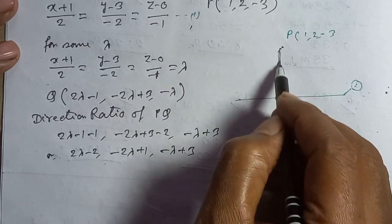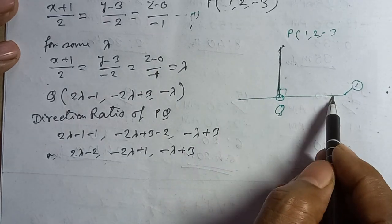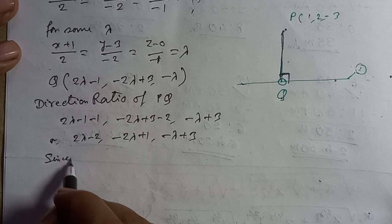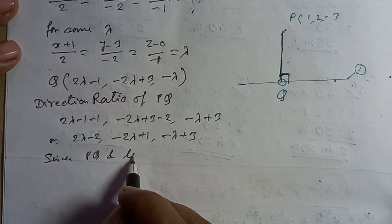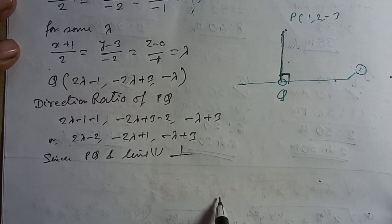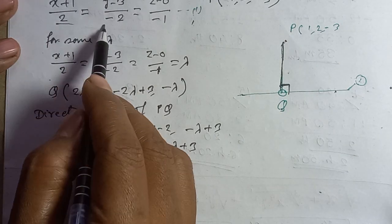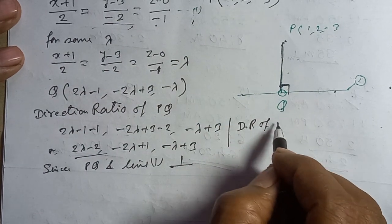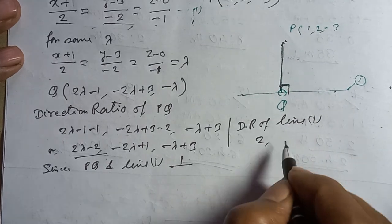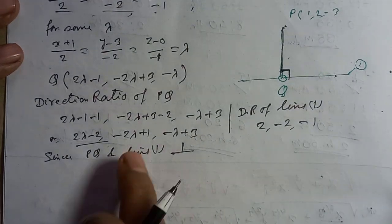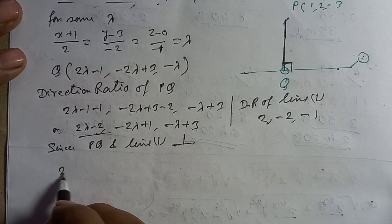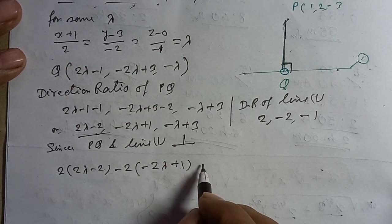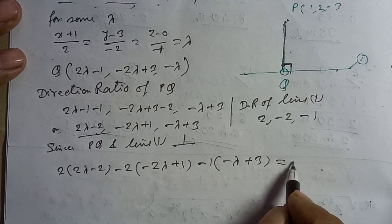The direction ratio of line 1 is (2, -2, -1). Since PQ is perpendicular to the line, their dot product equals zero. The direction ratios of PQ are: (2λ-1-1, -2λ+3-2, -λ-(-3)) = (2λ-2, -2λ+1, -λ+3). So: 2(2λ-2) + (-2)(-2λ+1) + (-1)(-λ+3) = 0.